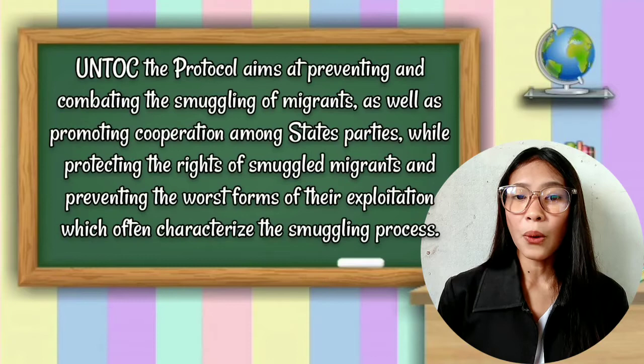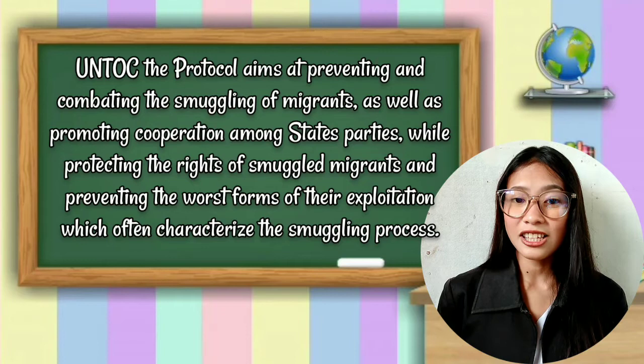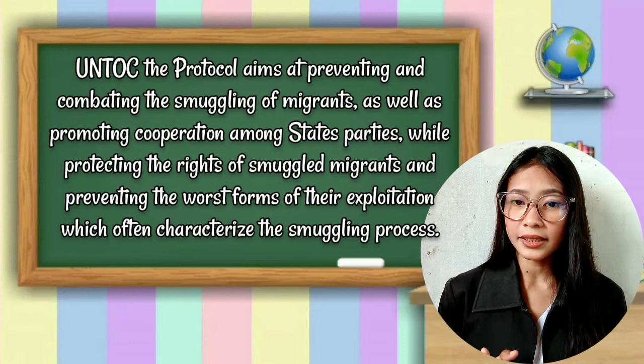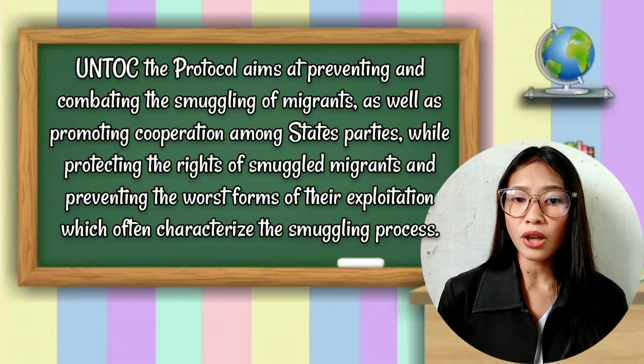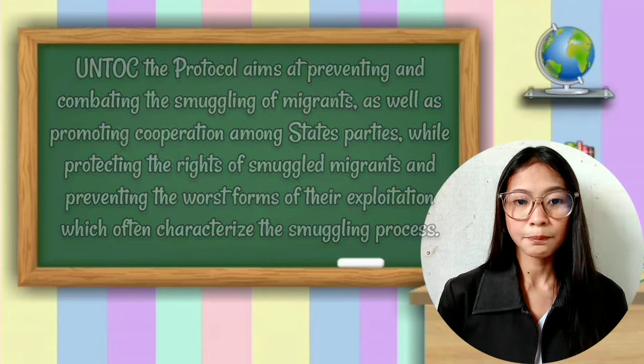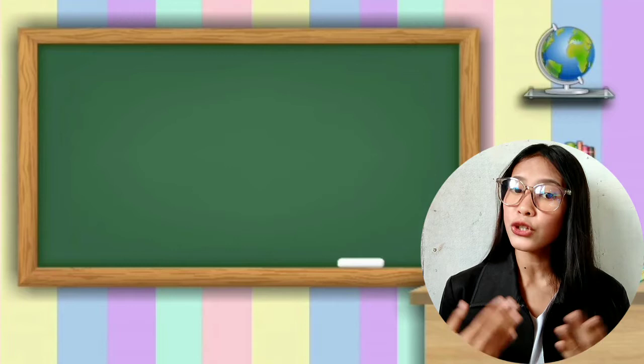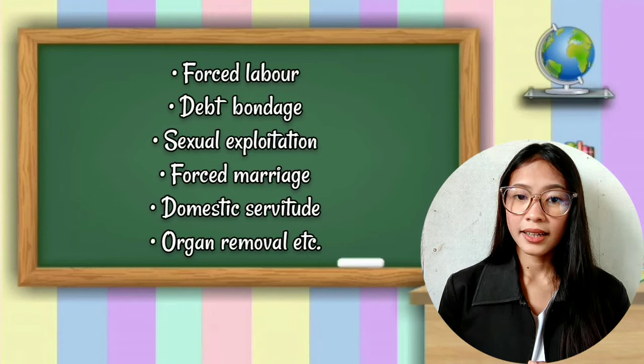The UNTOC protocol aims to prevent and combat the smuggling of migrants, as well as promoting cooperation among state parties, while protecting the rights of smuggled migrants and preventing the worst forms of their exploitation. In an easier way to know what is human trafficking, here are the following examples: